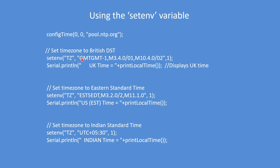The environment variable is called TZ. This example uses GMT and GMT minus one, and has a whole series of parameters that need to be defined. You can then print UK time and Eastern Standard time. All you need to do is change the environment variable and the time will be updated for you. There's also an unusual example of Indian time, which uses half-hour increments.